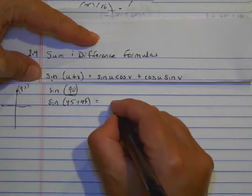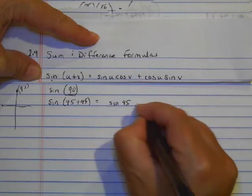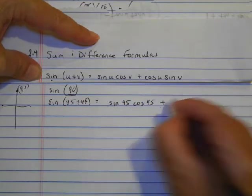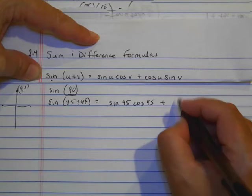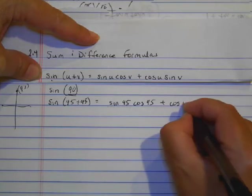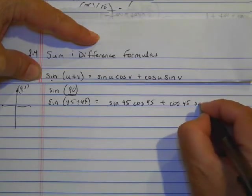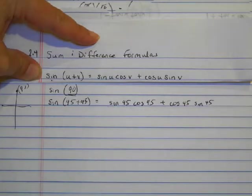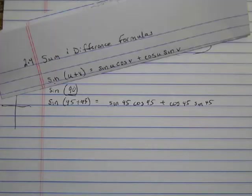So here I'm going to use the sum formula for sine, which is sine of the first number, cosine of the second number, plus cosine of the first number times sine of the second number. So let's see what happens here when I work this out.